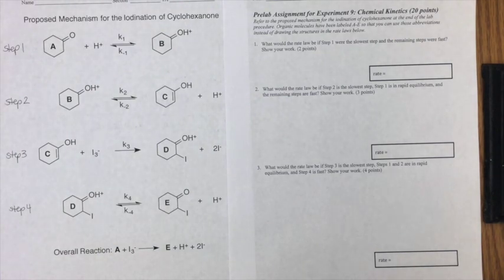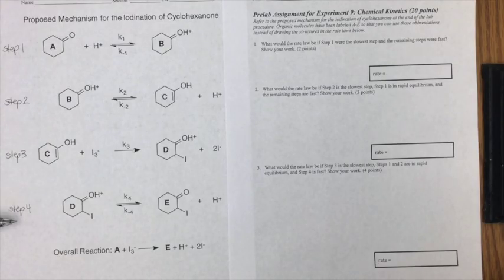Ok, let's get started with the pre-lab assignment for experiment 9 chemical kinetics. You guys are working with a reaction mechanism this week. I've written here step 1, step 2, step 3, step 4.